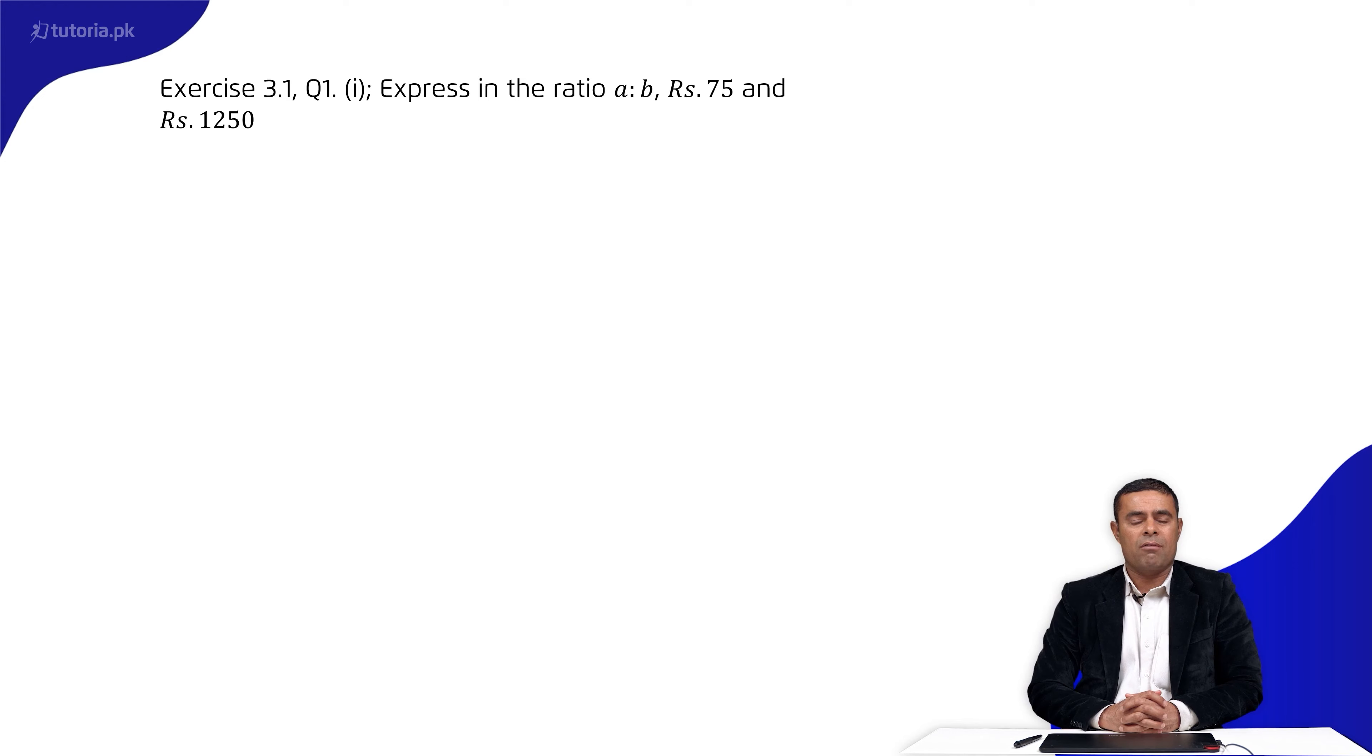Exercise 3.1, question number one: Express in the ratio a:b. We need to express 75 and 1250 as a ratio. So 75 ratio 1250, and we know ratio can be written in fraction form: 75 over 1250.